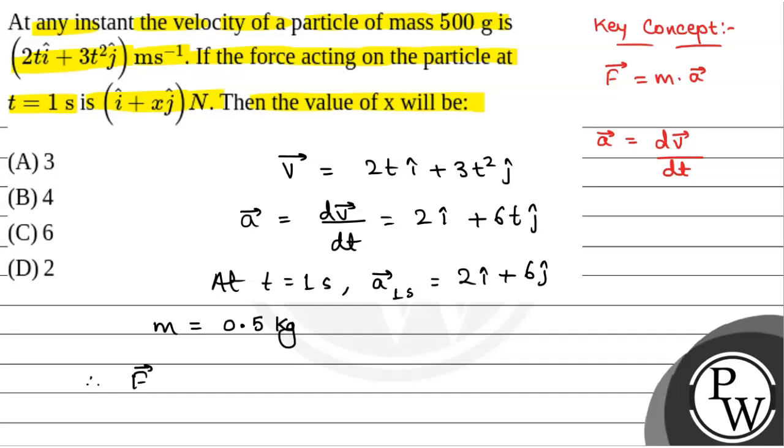Therefore, force acting on the particle f will be equal to mass into acceleration that is 0.5 into 2 i cap plus 6 j cap. So, that will be equal to i cap plus 3 j cap. The force acting on the particle will be i cap plus 3 j cap Newton.